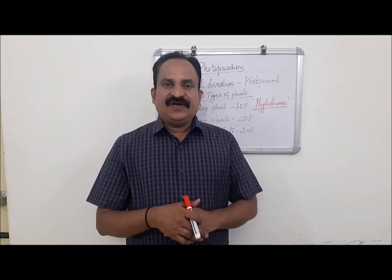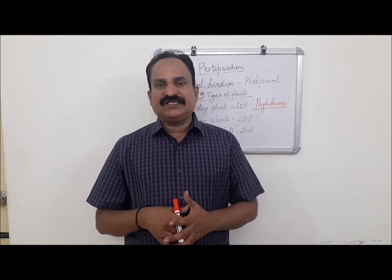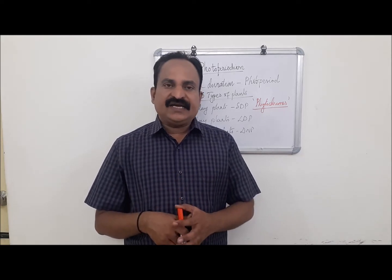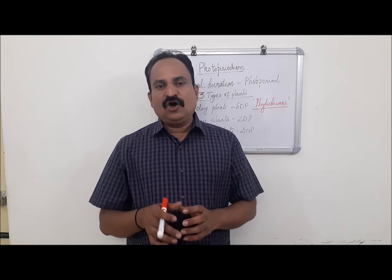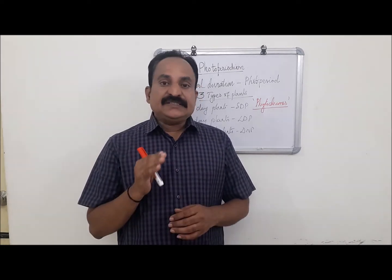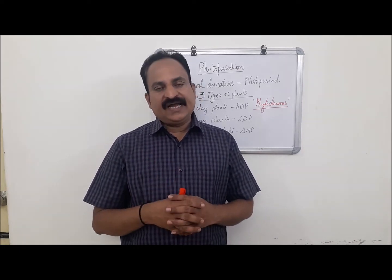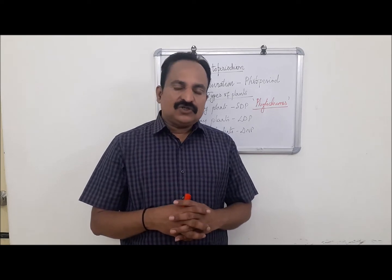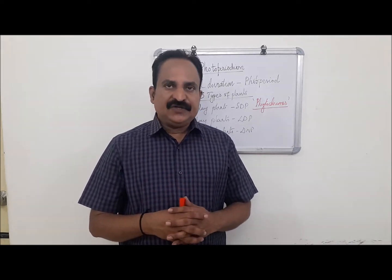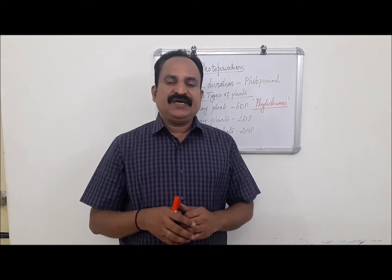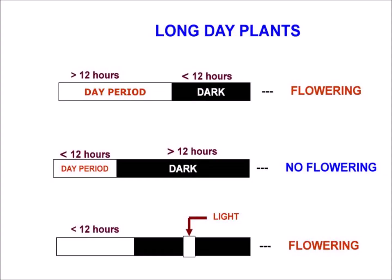Plants which flower when the photo period or critical duration becomes greater than the critical day duration are called long day plants. These plants need short nights and long days, so they are also called short night plants. Examples include wheat, lettuce, cabbage, radish, etc. Long day plants require a longer daylight period, usually 14 to 16 hours in a 24-hour cycle, for subsequent flowering.